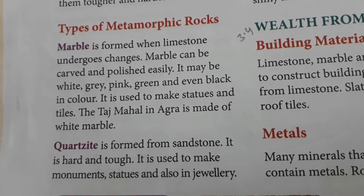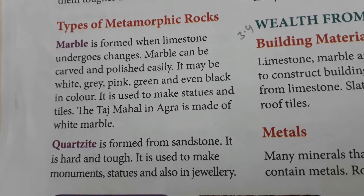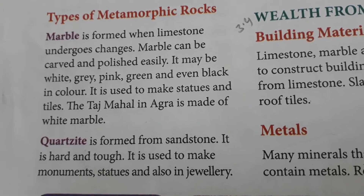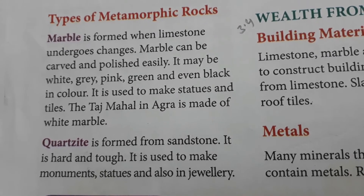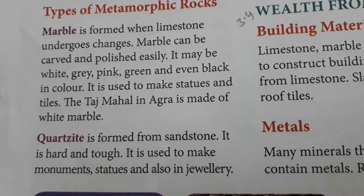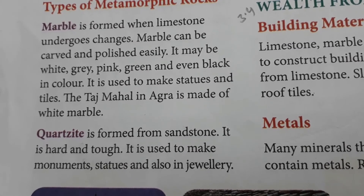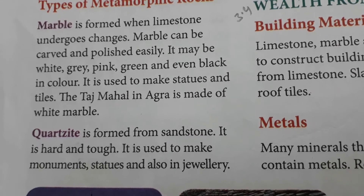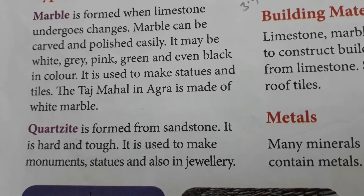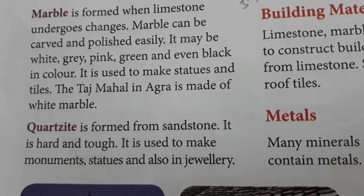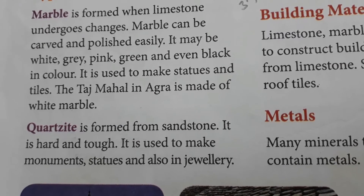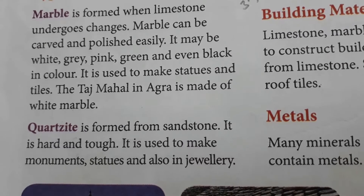The first type is marble. Marble is formed when limestone undergoes changes. Marble can be carved and polished easily. It may be white, grey, pink, green, and even black in color. It is used to make statues and tiles. The Taj Mahal in Agra is made of white marble.